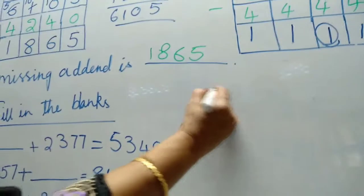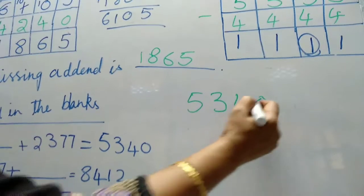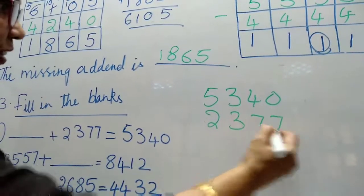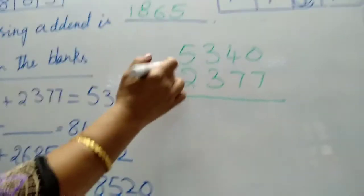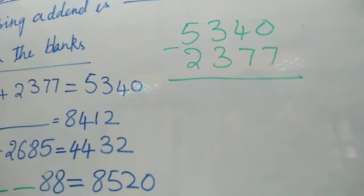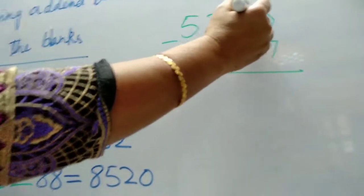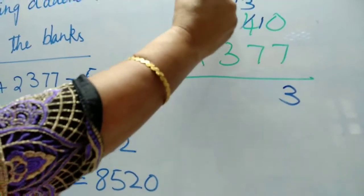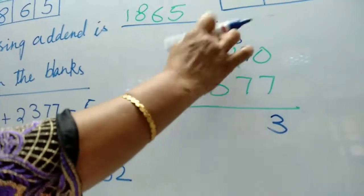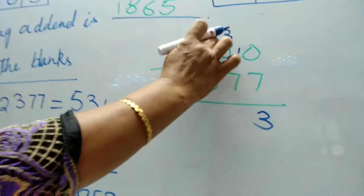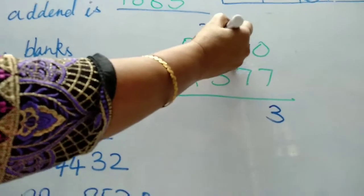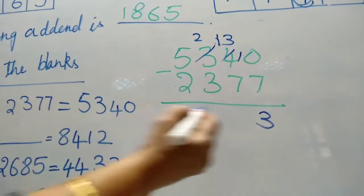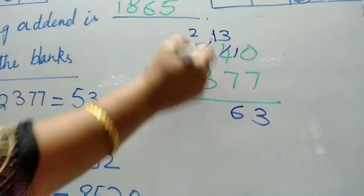Find out like this. Put the total 5, 3, 4, 0 minus 1 addend 2, 3, 7, 7. Subtract. 0 minus 7 not possible, borrow 1 here. From 13, 7 goes 6. 3 cannot go.